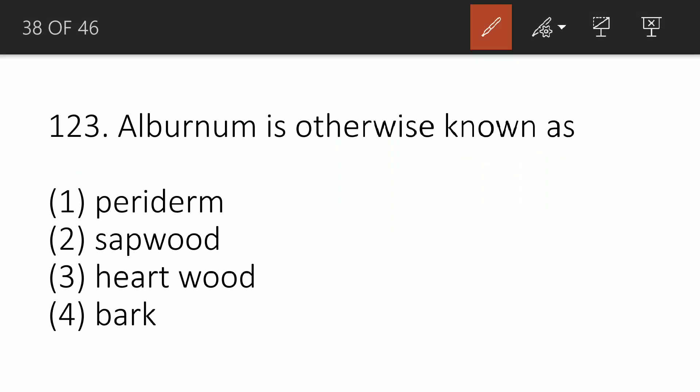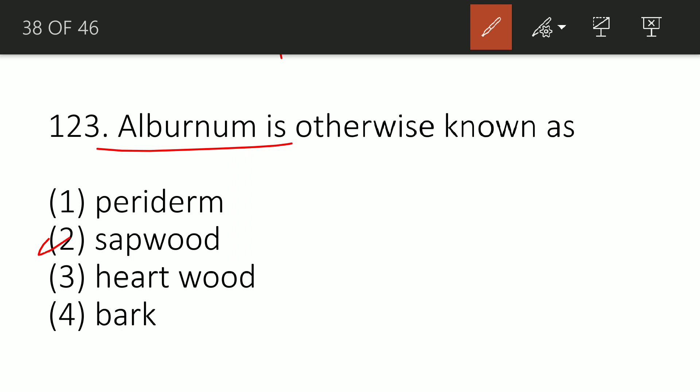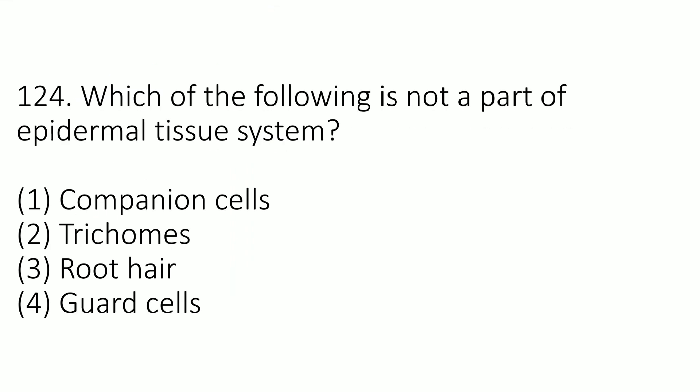Question 122: Alburnum is otherwise known as what? Options: A — peridium, B — sapwood, C — heartwood, or D — bark. The correct option is B — sapwood. Alburnum is another name for sapwood.